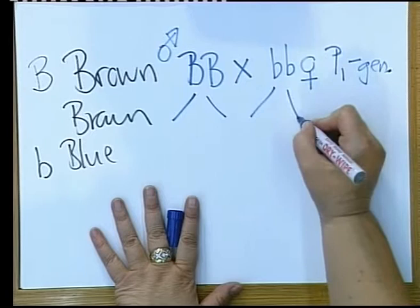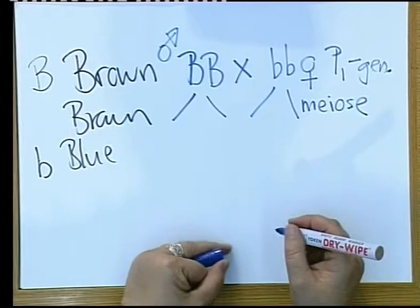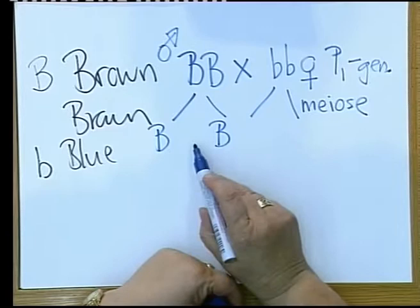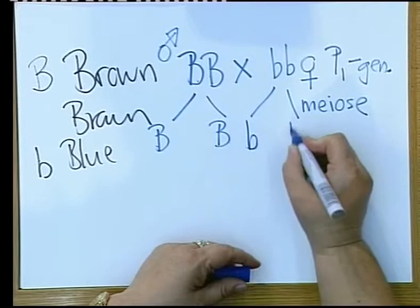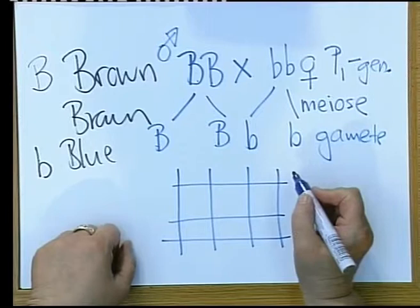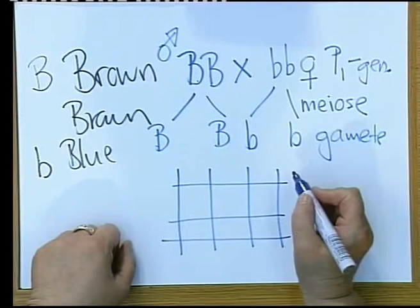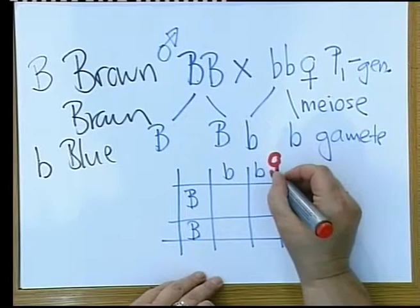This will be what we call the first parent generation. We will have the process of meiosis taking place, and gametes are formed. The female gametes are written at the top. The male gametes are written on the left hand side.